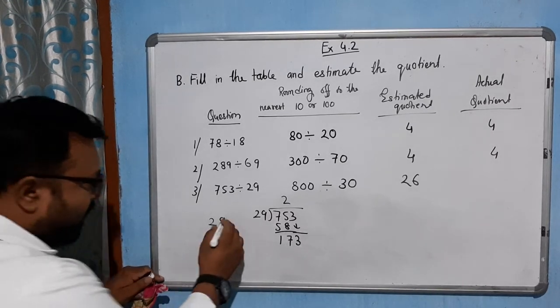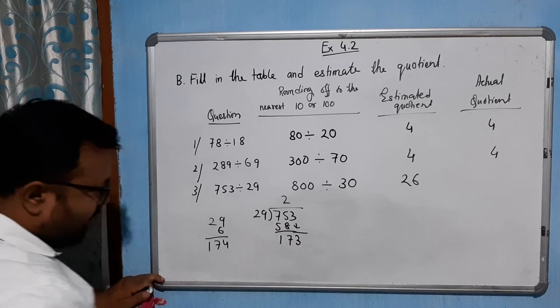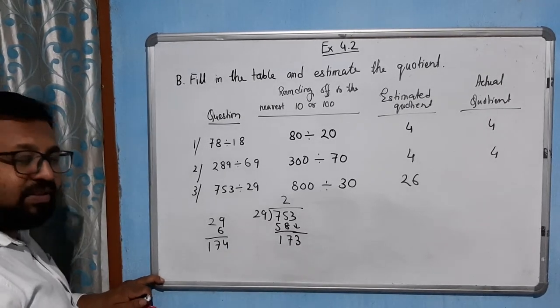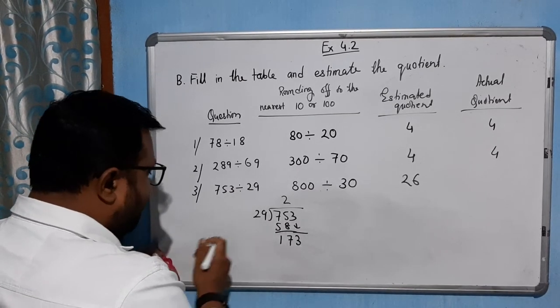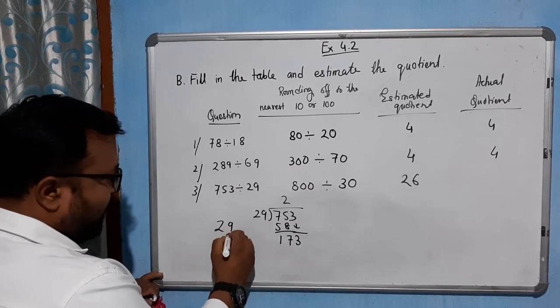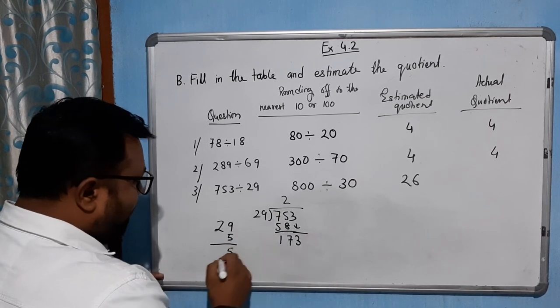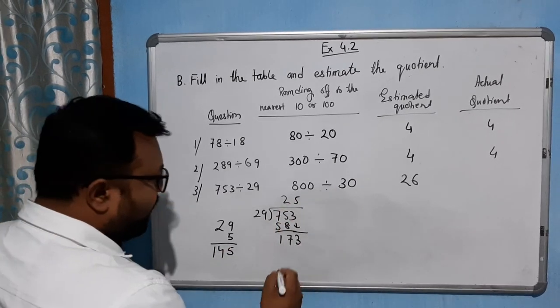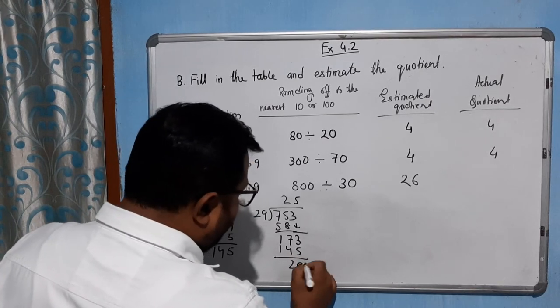29 times 6 is 174. 174 is greater than 133, so we will take 1 less, meaning 29 multiplied by 5. How much will you get? We will get 145. Let's see.